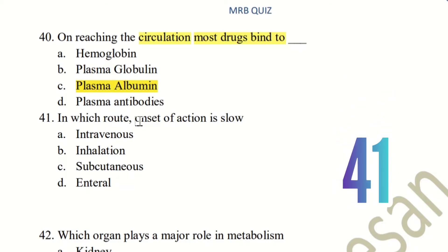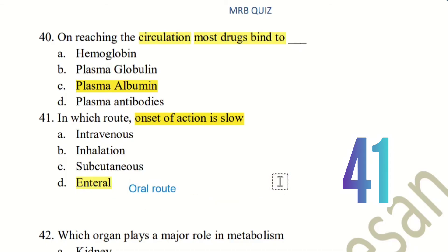Question 41: In which route is the onset of action slowest? The choices are intravenous, inhalation, subcutaneous, and enteral. Intravenous goes directly into the bloodstream, so onset is very fast. Inhalation and subcutaneous also reach the bloodstream relatively quickly. The enteral route — oral route, such as tablets, syrups — requires the drug to dissolve, break down, and cross the cell membrane, which takes around 15-30 minutes. That is why the enteral route has the slowest onset of action.